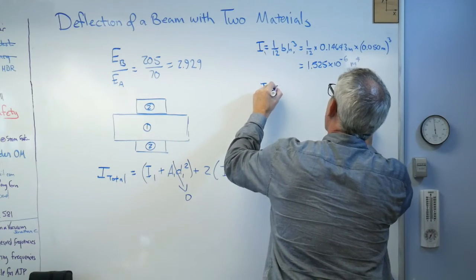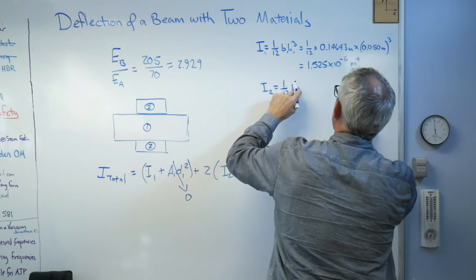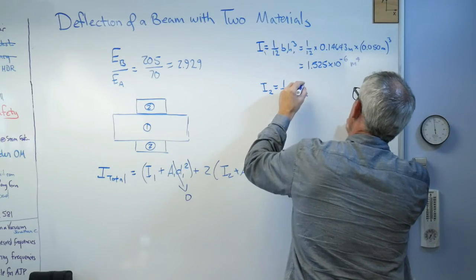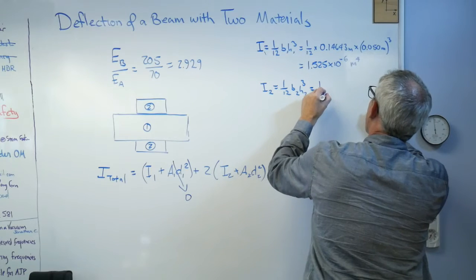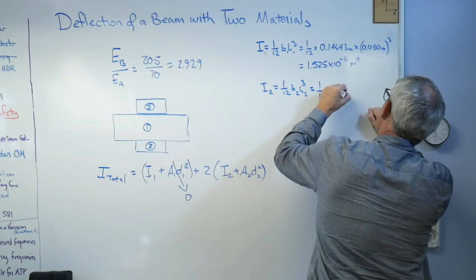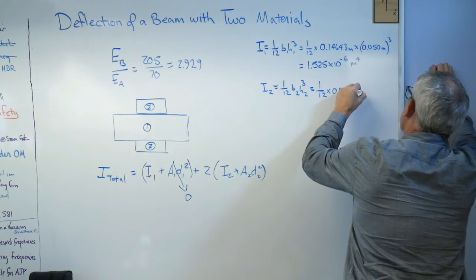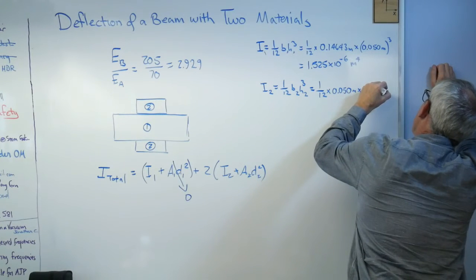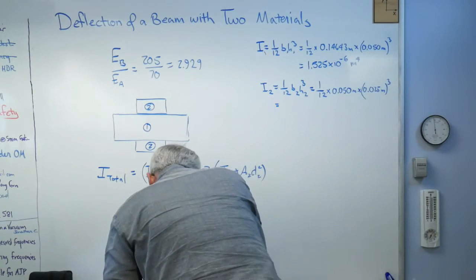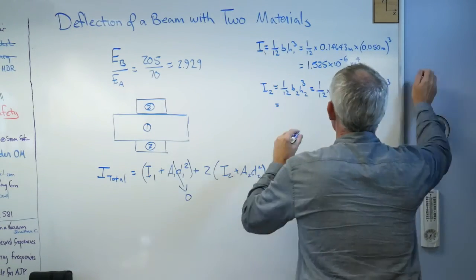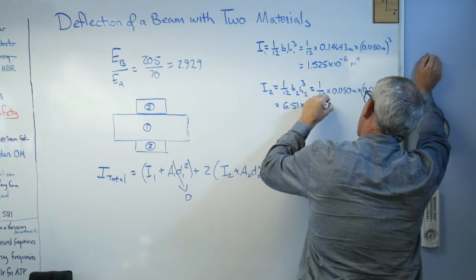I2 now, this is going to be the one we haven't changed. 1/12 B2 H2 cubed. That's going to be 1 over 12 times the base is 0.050. Because remember, we haven't changed this any. That's meters times 0.025 meters cubed. And if you want to run that, work that number out, 6.51 times 10 to the minus 8. Wow. Real tiny number.